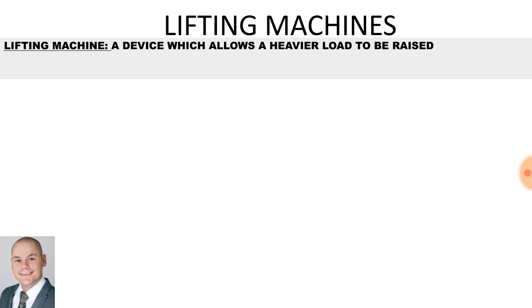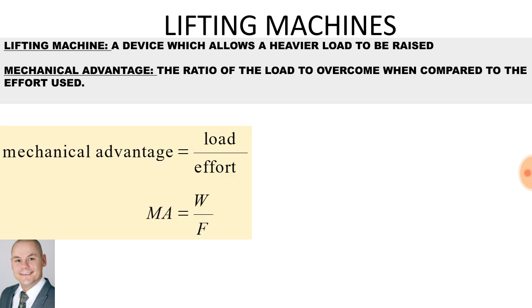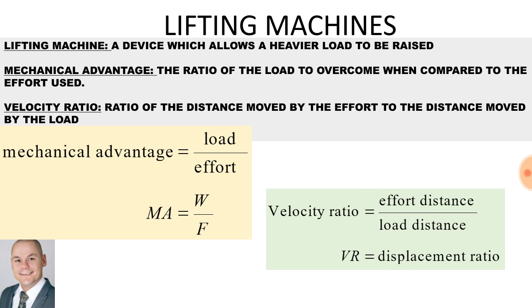Definitions for lifting machines: a lifting machine is a device which allows a heavier load to be raised. Mechanical advantage is the ratio of the load to overcome compared to the effort used, calculated as load divided by effort. The velocity ratio is the ratio of the distance moved by the effort to the distance moved by the load, calculated as effort distance divided by load distance.